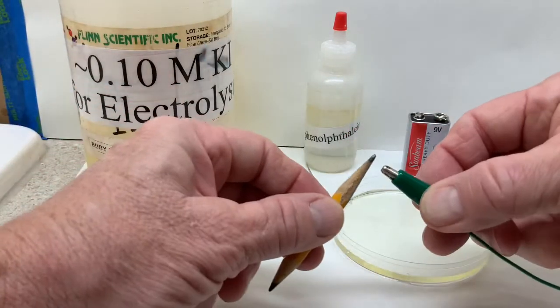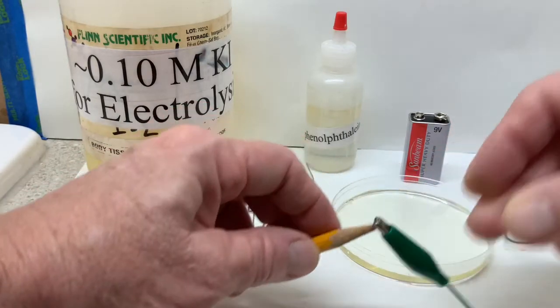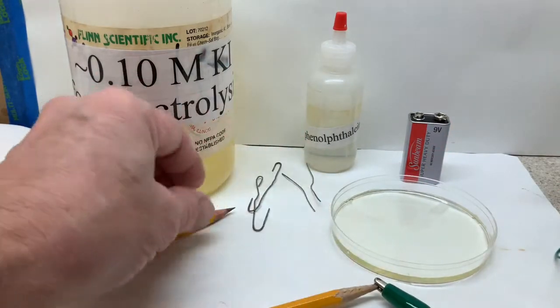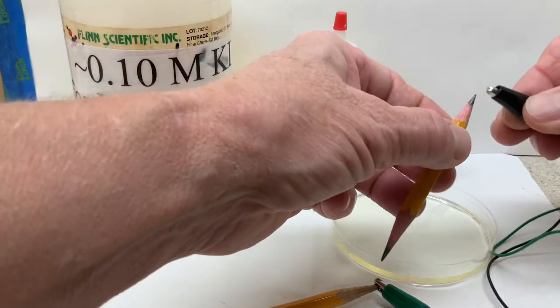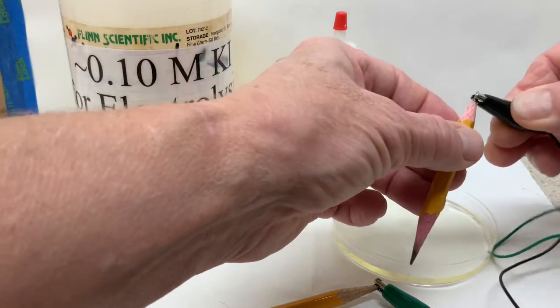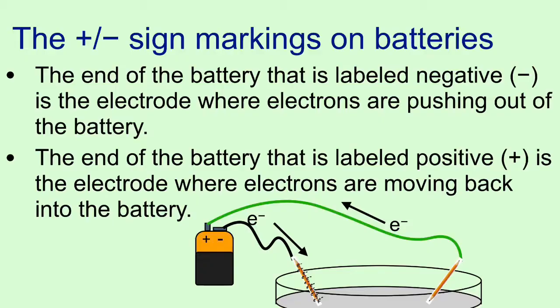Connecting the pencils that have been sharpened at both ends, of course so the graphite is connected to the wire, and will be then dunked into the solution. Pay attention to the markings on the batteries.